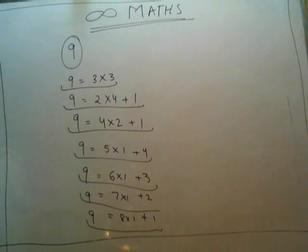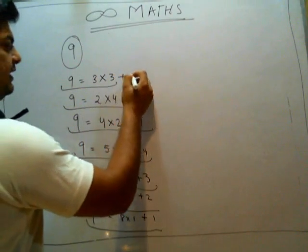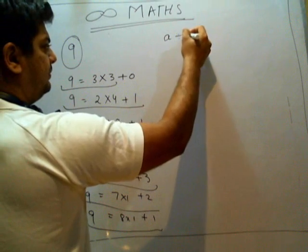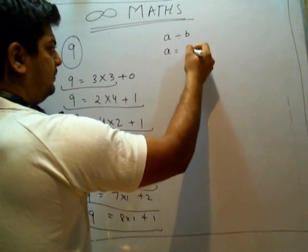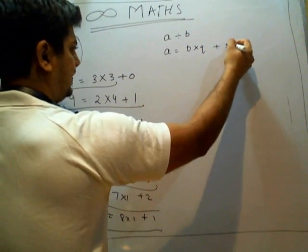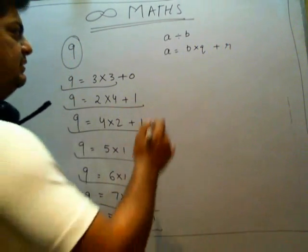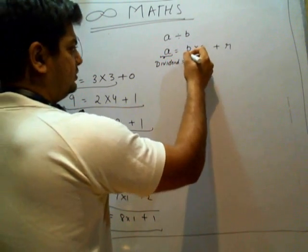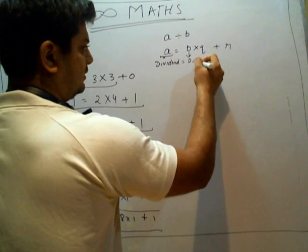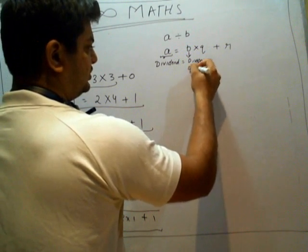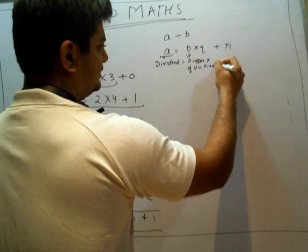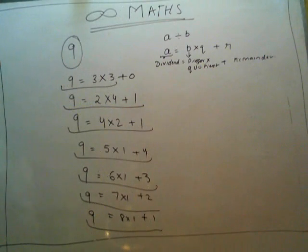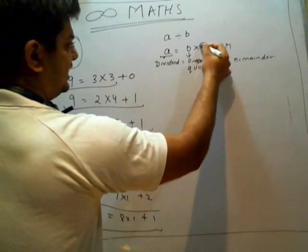What I am trying to explain here is: every number, if A is divided by B, then A is of the form B×Q + R. What is this? This is as simple as: dividend equals divisor times quotient plus remainder.